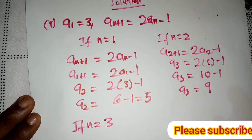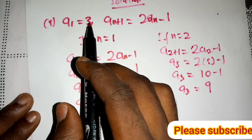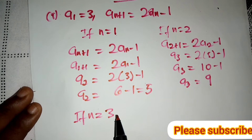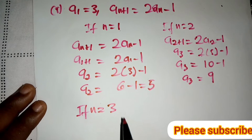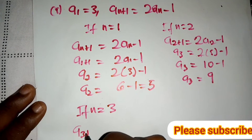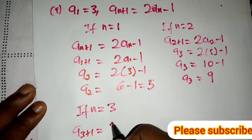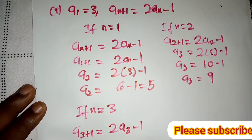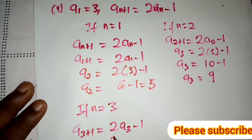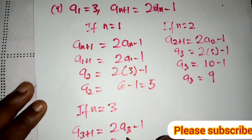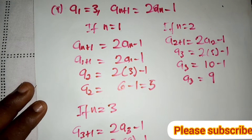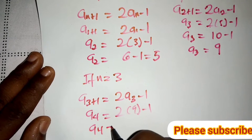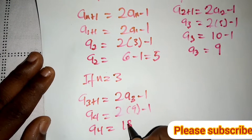The question says we should find the first five terms. So far we have the first term as 3, the second term as 5, and the third term as 9. For the fourth term, if n = 3, a3+1 = 2*a3 - 1, so a4 = 2(9) - 1.